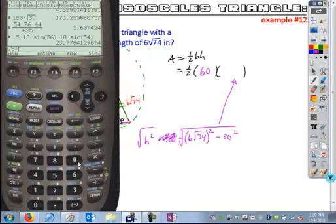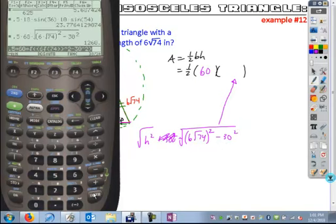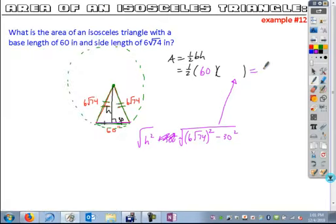So one-half, times 60, times this whole calculation, which is the square root of, here I'm going to take my quantity 6, square root 74. I'm closing off that whole group and squaring it. And then minus 30 squared, close off my whole square root here. And when I hit enter, I get my calculated value of 1260. The units are inches. It is an area, so it's square units. And so that would be my total area.